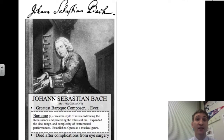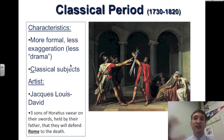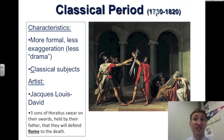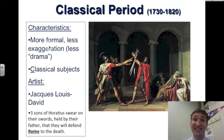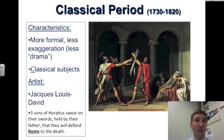Bach takes hold in the Baroque period. The classical period comes after the Baroque period, ranging from 1730 to 1820. The characteristics of the classical period include more formal, less exaggerated art with less drama. Classical subjects meaning the big-C classics — from ancient Rome and ancient Greece.